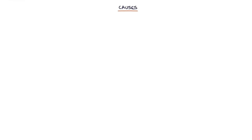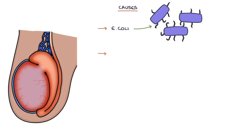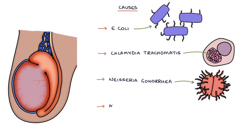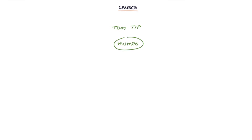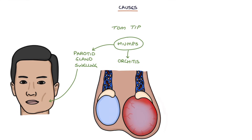Let's talk about the causes of epididymal orchitis. The key causative pathogens are E. coli, Chlamydia trachomatis, Neisseria gonorrhea, and mumps. A Tom tip for you: think of mumps in patients with parotid gland swelling and orchitis. Mumps tends only to affect the testicle, sparing the epididymis. Mumps can also cause pancreatitis.